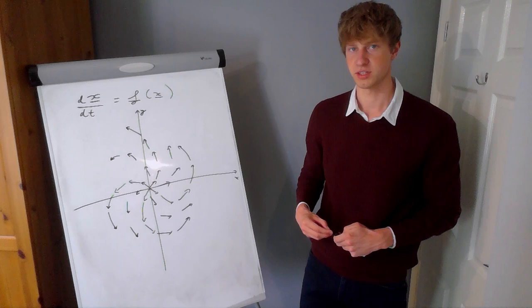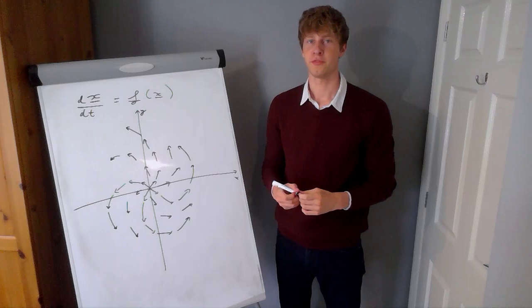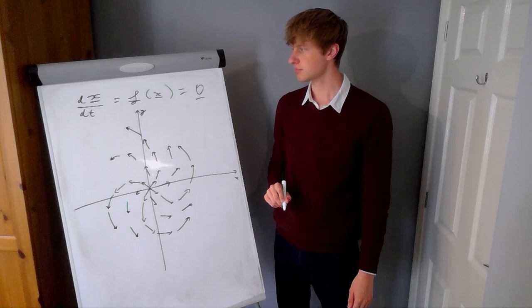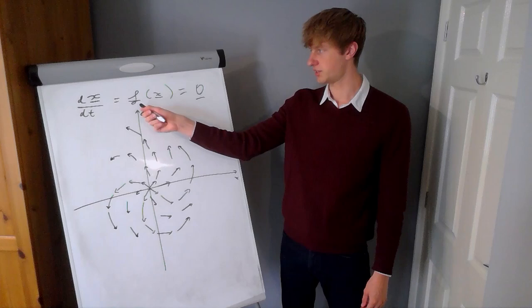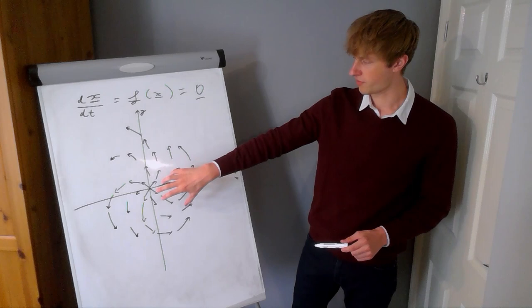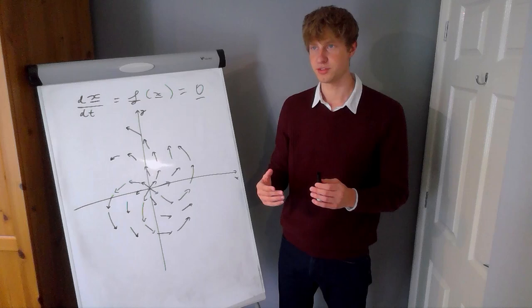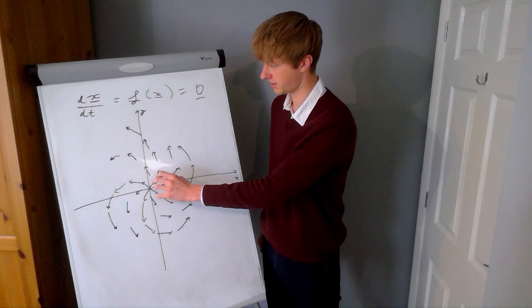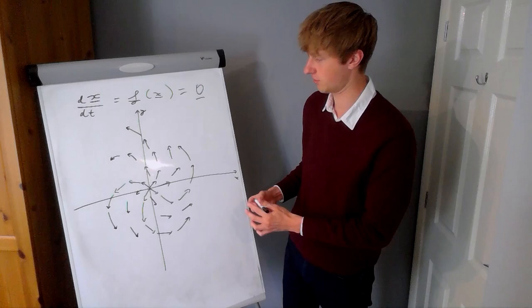The fixed point of a two-dimensional system is where the rate of change given by the function equals zero for both coordinates. To find fixed points you just solve f(x⃗) = 0. We can then study the function to classify fixed points based on what the vector field looks like around them. This would be an unstable spiral — starting slightly away from the fixed point, you move away in a spiral shape. A stable spiral goes the other way, moving towards the fixed point.